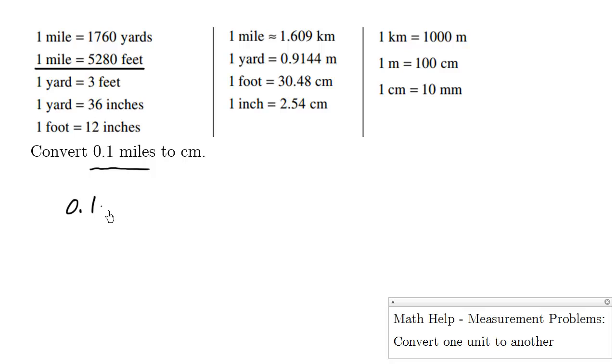So 0.1 miles equals 0.1 miles times 1. Anything equals itself times 1. And the nice thing is we can replace the number 1 with some fraction as long as the numerator and the denominator are the same.